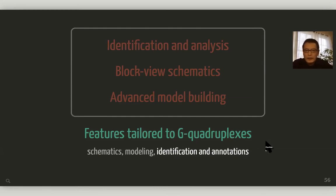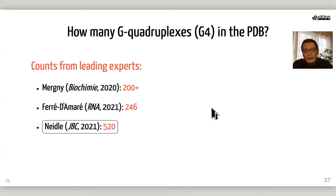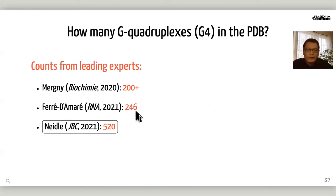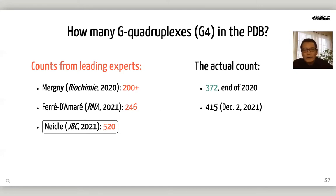This is a feature for G-quadruplexes. I will focus on identification and annotation of G-quadruplexes. A simple question: how many G-quadruplexes are in the PDB? You would assume this is very simple, but leading authors can come up with very different answers. In a 2021 paper by Steven Neidle, a number of 520 was given. In another publication, 246 was given. They differ by a factor of two. It turns out both are off the mark — the actual number at the end of 2020 is 372. As of early this month, the number is 415.